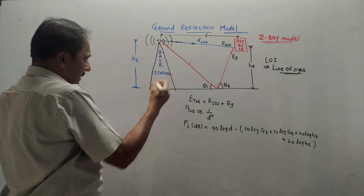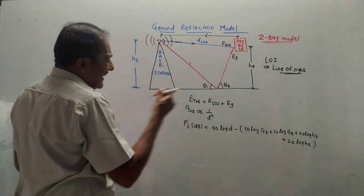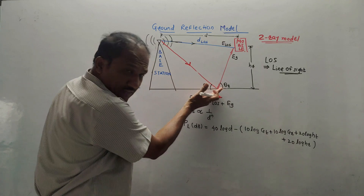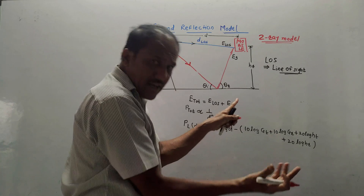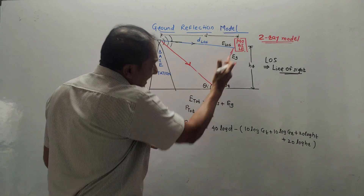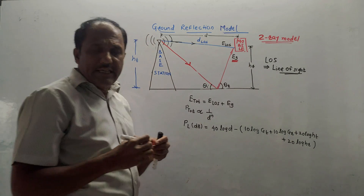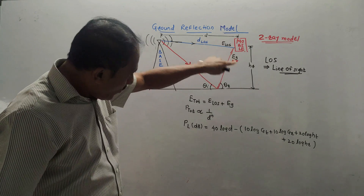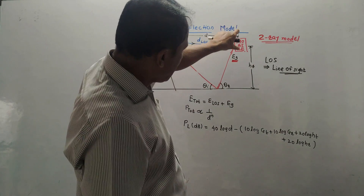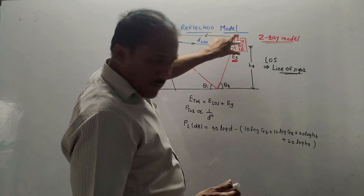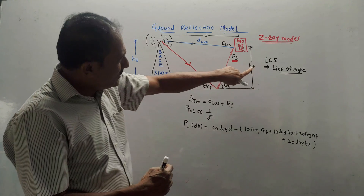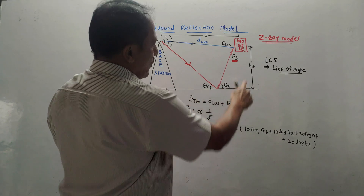There is one more ray shown in the diagram. The base station generates the signal and it reaches towards the ground, making an angle theta i — angle of incidence. It causes reflection from the ground surface at an angle theta r — angle of reflection. According to optics, theta i equals theta r. This reflected wave has electric field intensity denoted by EG, the electric field intensity of ground waves. The ground wave is transmitted from the base station, reaches the ground surface, gets reflected, and then passes towards the receiver — the mobile handset.